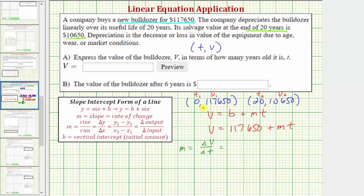So the change in the value is going to be equal to V sub two minus V sub one, which is 10,650 minus 117,650, divided by the change in T, and the change in time is going to be 20 minus zero.